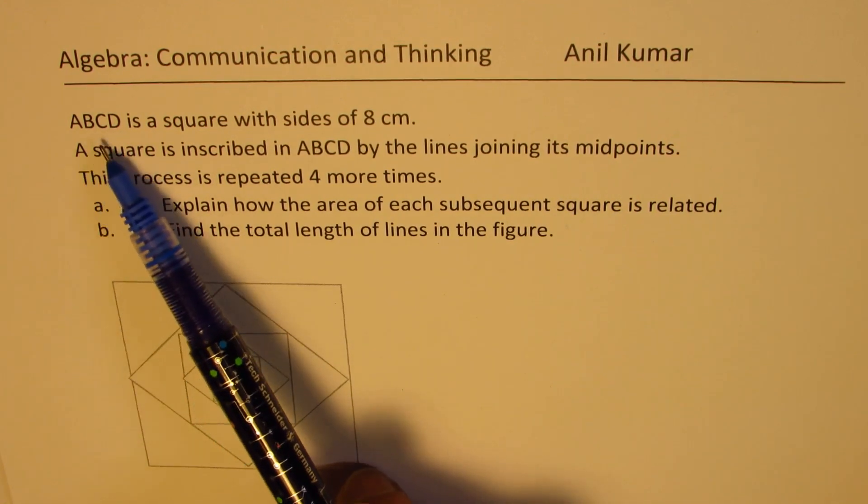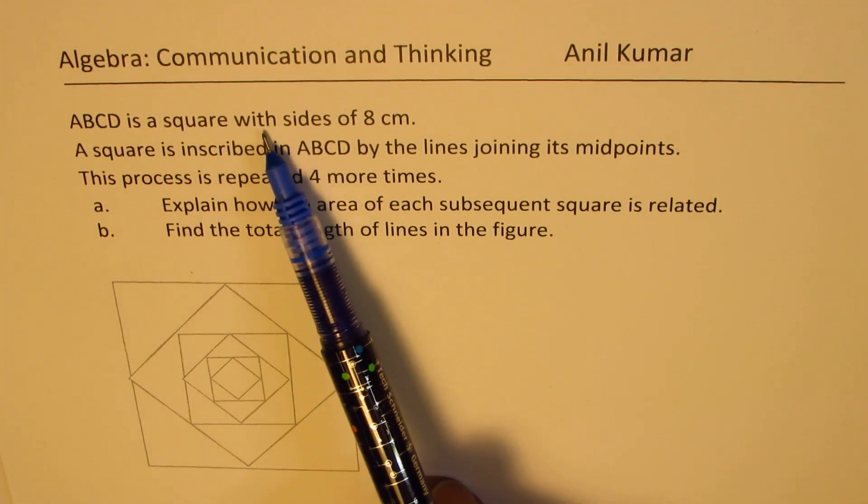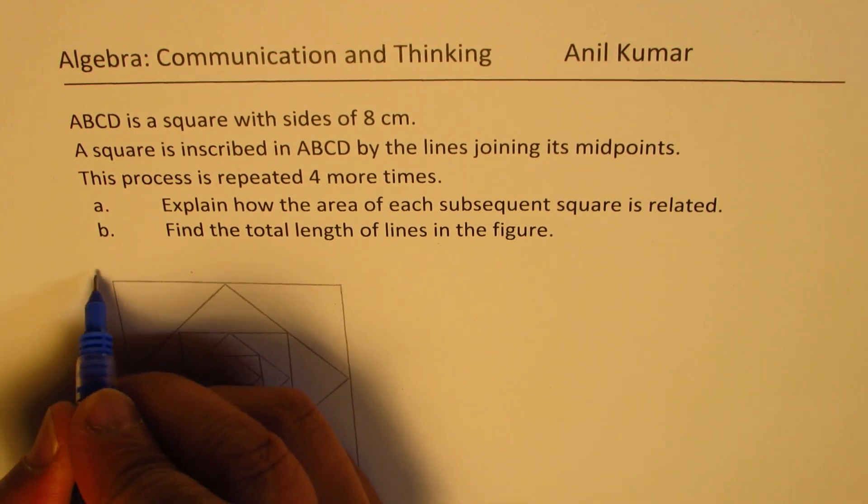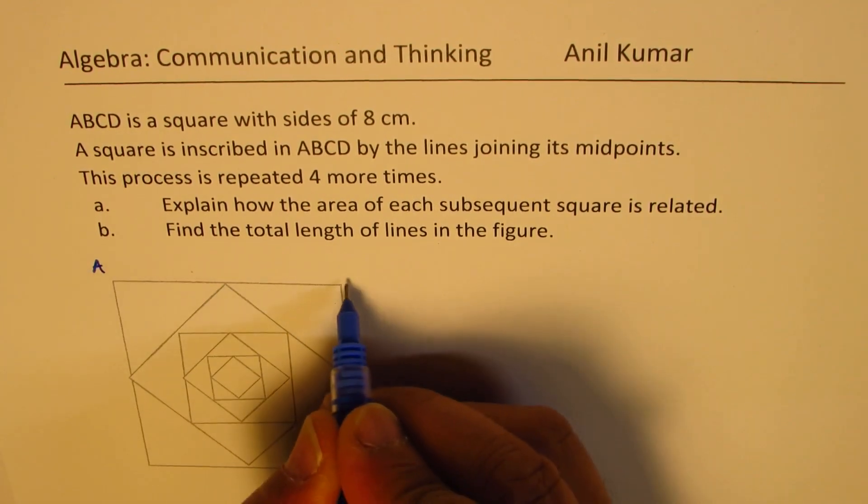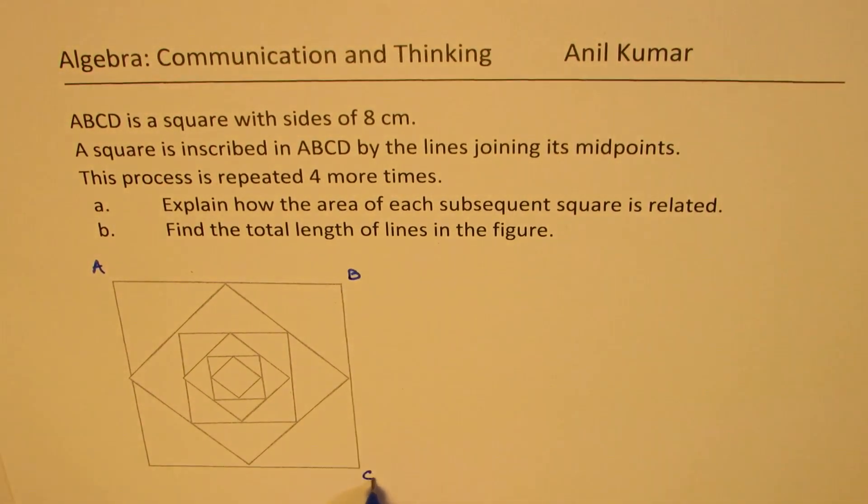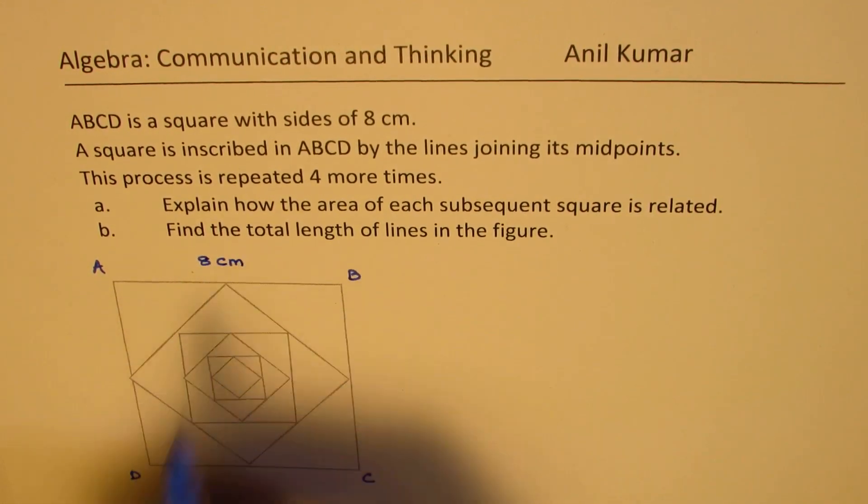Here we have ABCD is a square with sides of 8 centimeters. This is our square ABCD and each side is 8 centimeters.